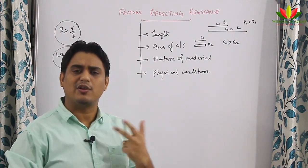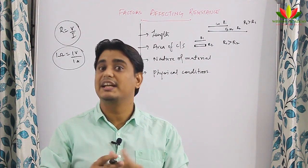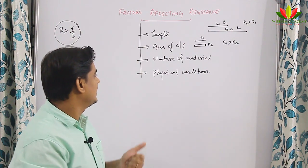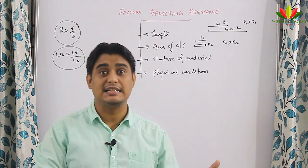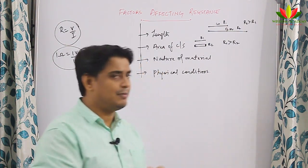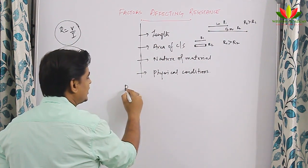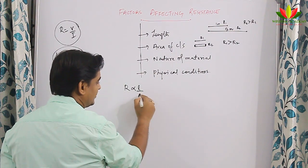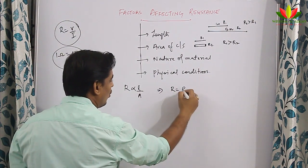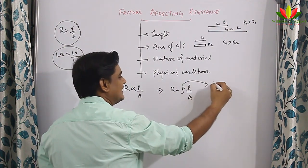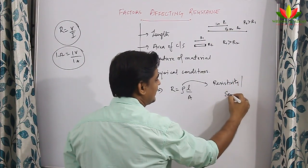Nature of material means if I take nichrome wire and copper wire, they both will have different resistance because their nature is different. Physical condition means if I change the temperature and pressure, the resistance value also changes — an increase in temperature will increase the resistance. I'll explain why in the next video. Combining all these things, R is proportional to L by A. Removing proportionality, I add a constant rho, which is known as resistivity or specific resistance.